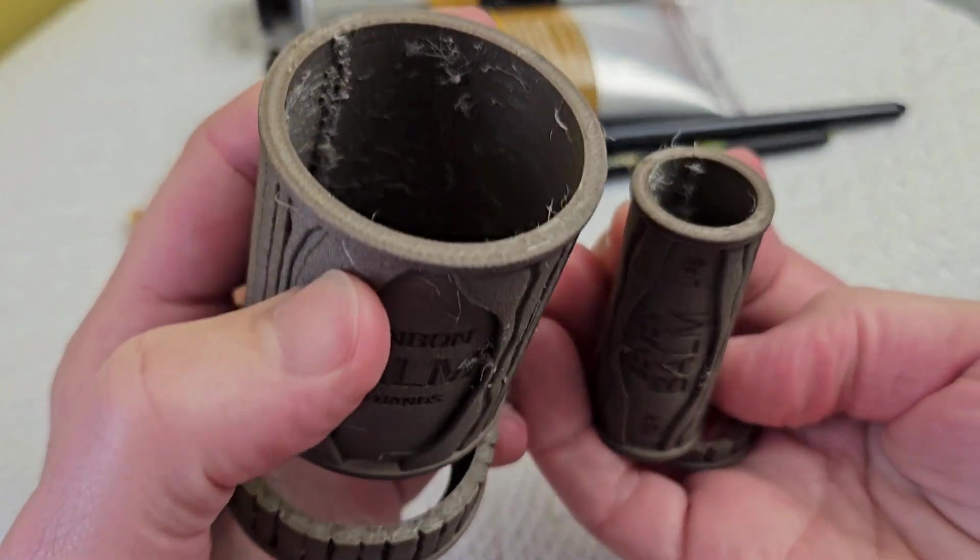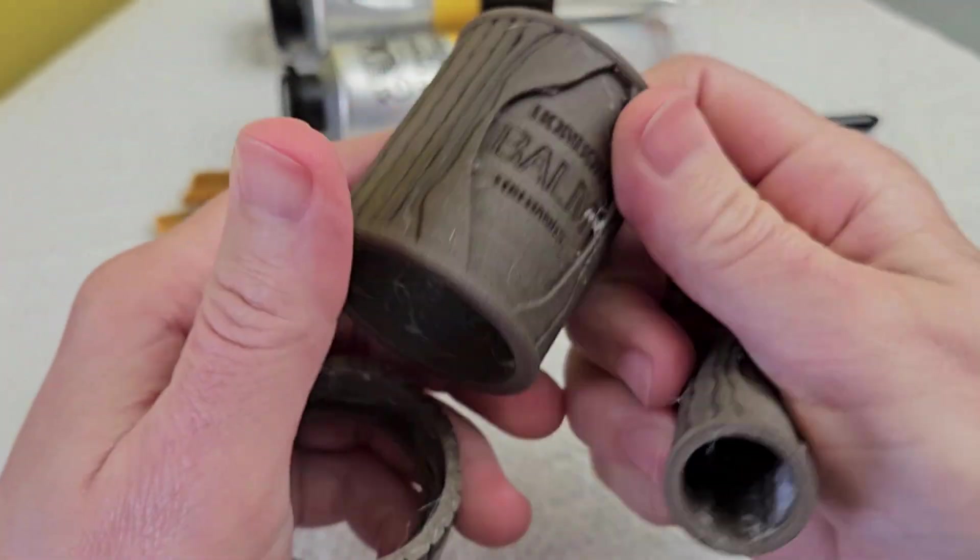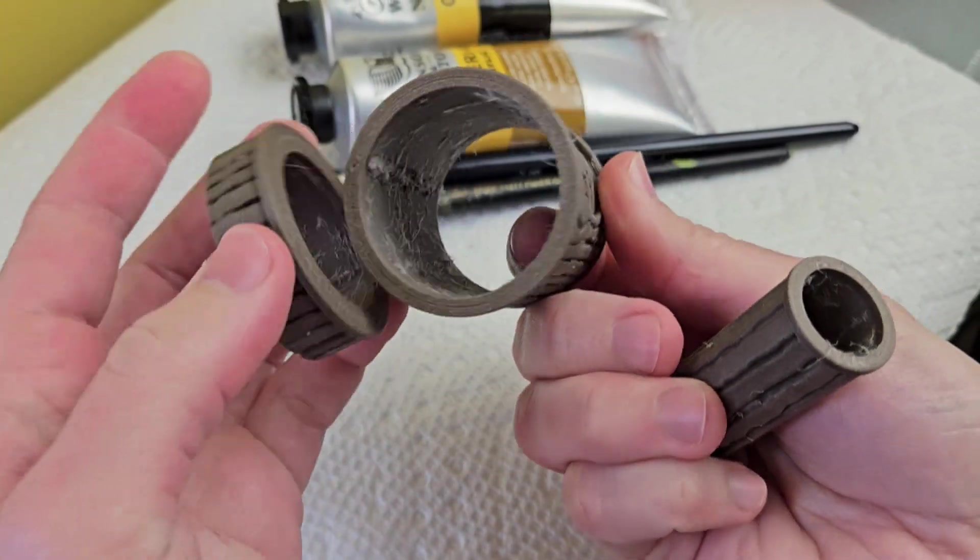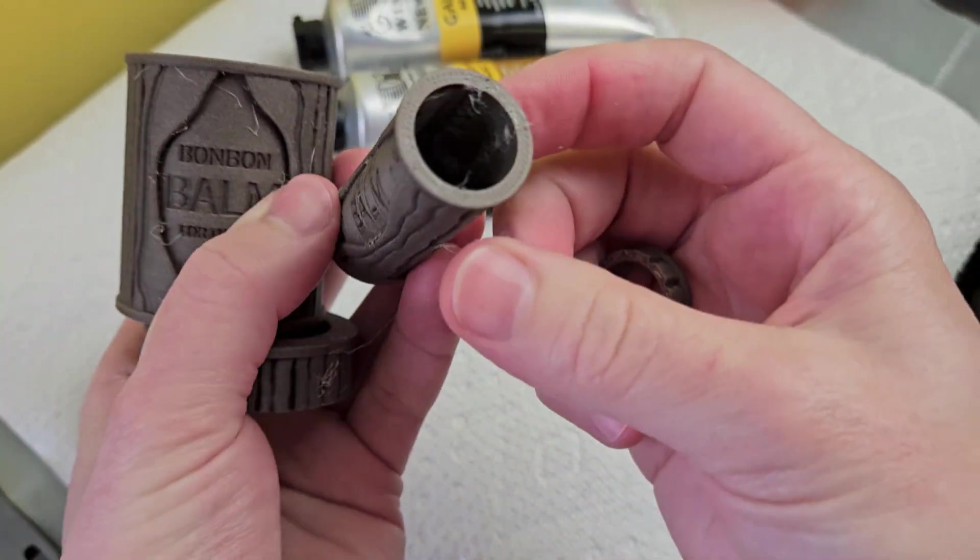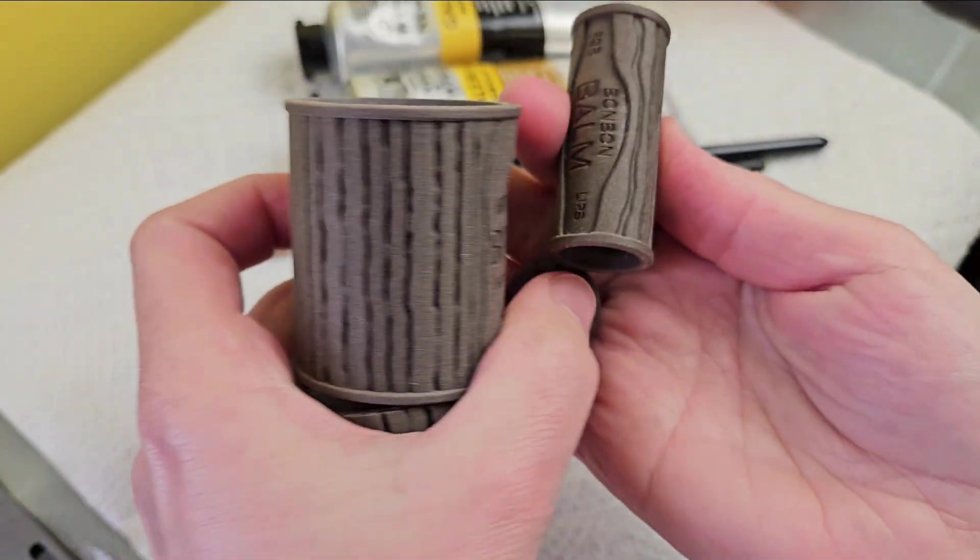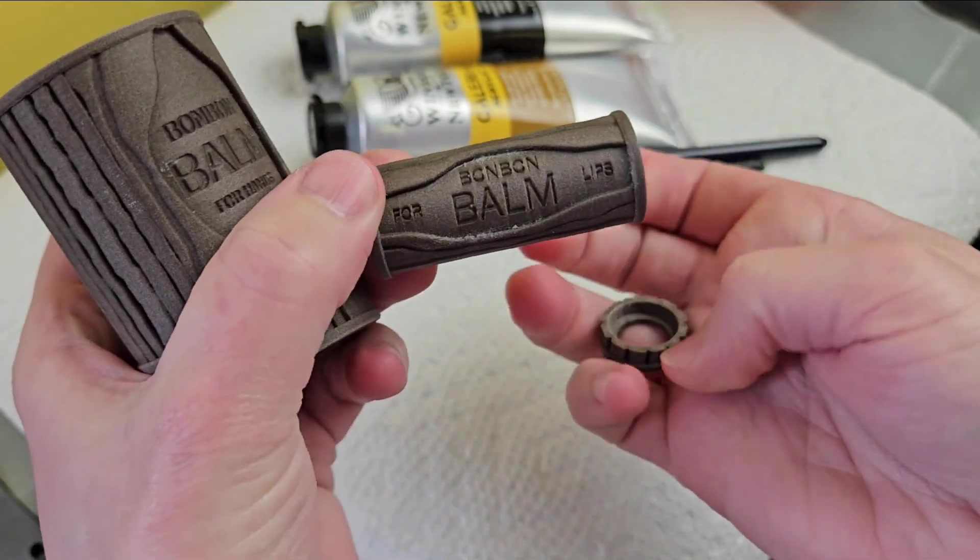Here's how the parts look straight off the printer. There's some stringing in there, needs a little bit of cleanup. There's for the lip balm version. And here's how those look once they're all cleaned up. Ready for paint now.